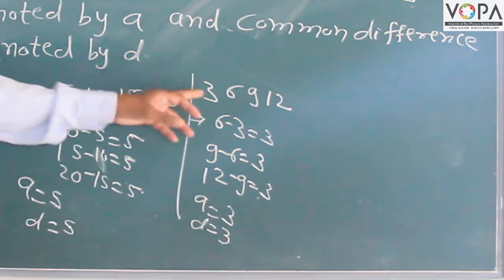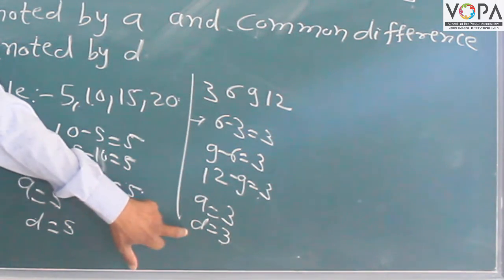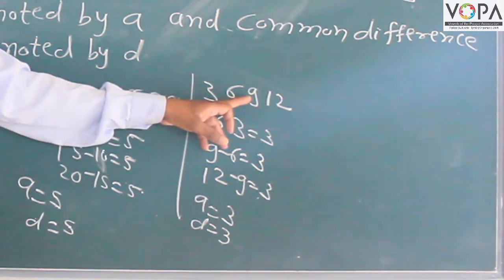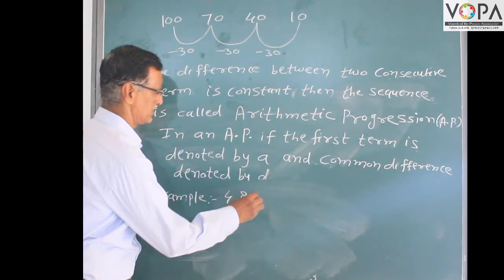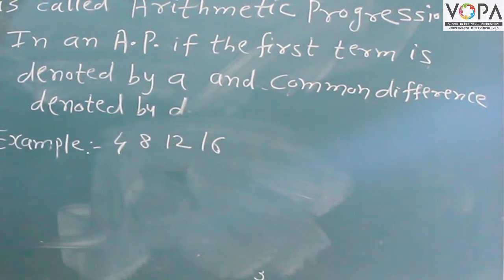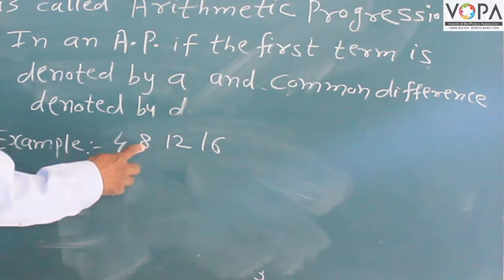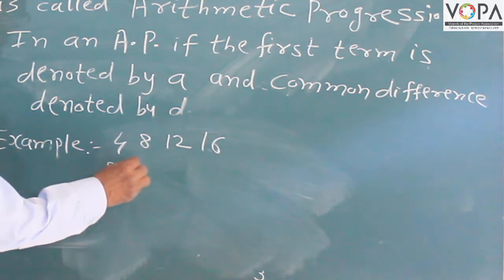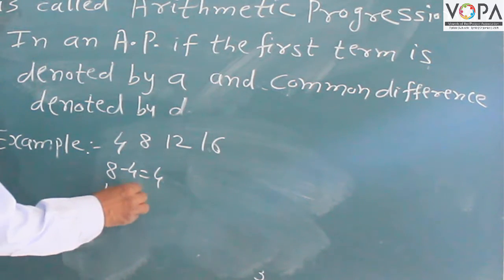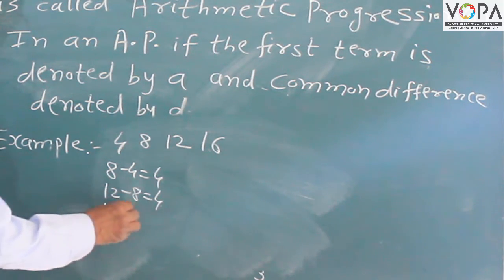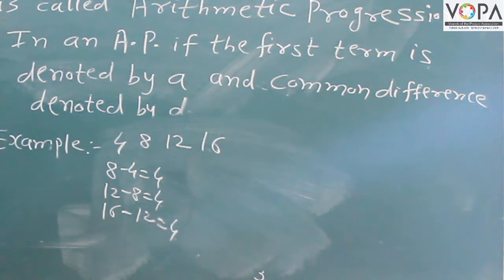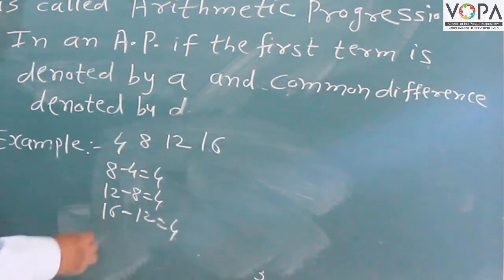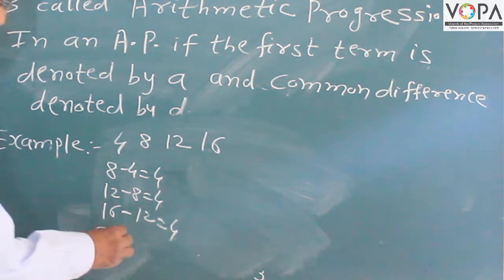For the sequence 4, 8, 12, 16: the first term is 4, second term is 8, third term is 12, fourth term is 16. Therefore: 8 minus 4 is equal to 4, 12 minus 8 is equal to 4, 16 minus 12 is equal to 4. The difference between two consecutive terms is constant, so this sequence is an AP. Therefore a is equal to 4 and d is equal to 4.